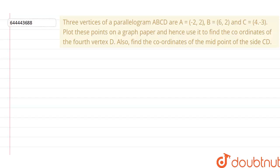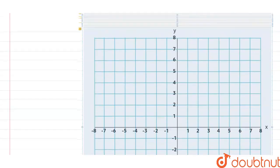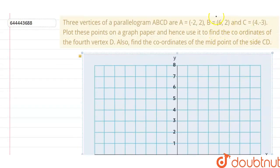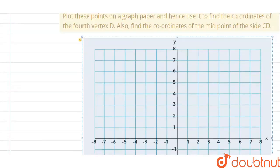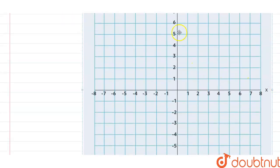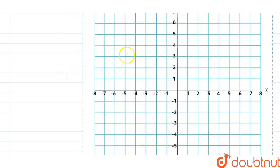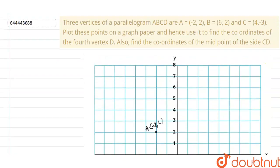First of all let us draw the Cartesian system. Now we have to plot the different points. Point A is (-2, 2), that means x is -2 and y is 2. So this point is going to lie at (-2, 2). This is point A.